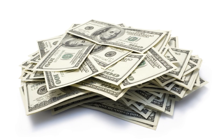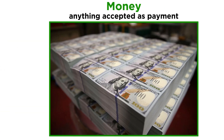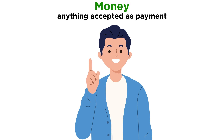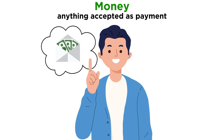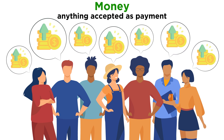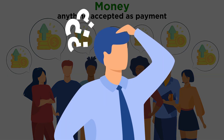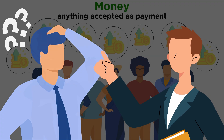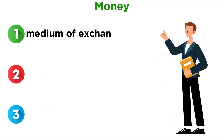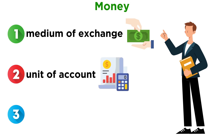Before we begin to make better choices, we have to understand what money is. Money is anything accepted as payment. Everybody needs it, and almost everybody talks about making it and wishes they had more of it. But what is the true purpose of money? To an economist, money generally has three purposes: to act as a medium of exchange, as a unit of account, and a store of value.